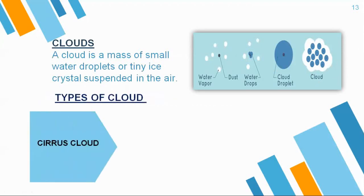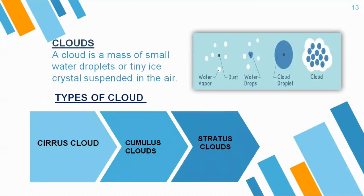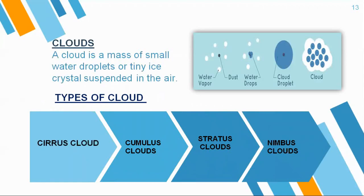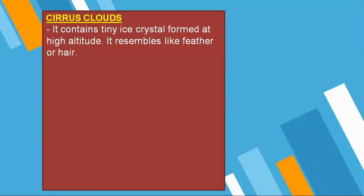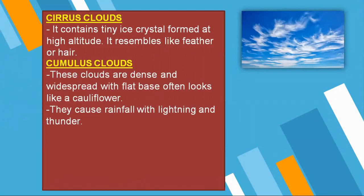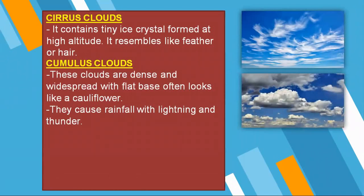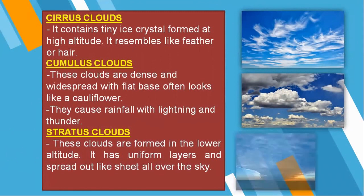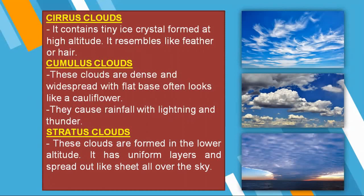There are different types of cloud. Firstly, cirrus cloud — these clouds have got tiny crystals in them and they are formed at high altitudes. If you see the image, you can see that it looks like a feather or like hair. Secondly, cumulus cloud — these clouds are dense and widespread, spread all over the sky. They have a flat base and often look like a cauliflower. Cumulus clouds are also responsible for causing rainfall with lightning and thunder. Stratus cloud — these clouds are formed in the lower altitude, with uniform layers spread out all over the sky like a sheet.